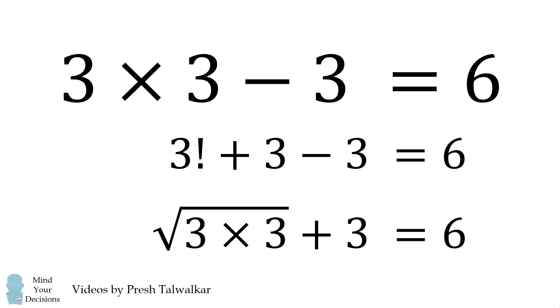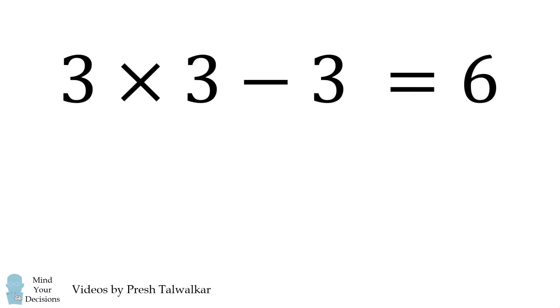Or, we can do something like the square root of the quantity 3 times 3 and then we can add 3. And that's also equal to 6. So, for presentation purposes, I'll just take 3 times 3 minus 3 is equal to 6.